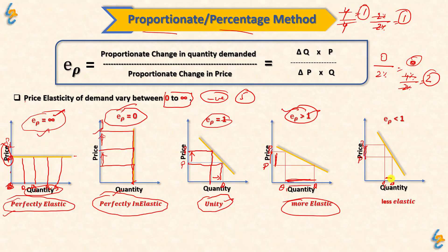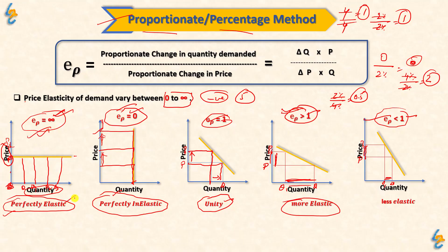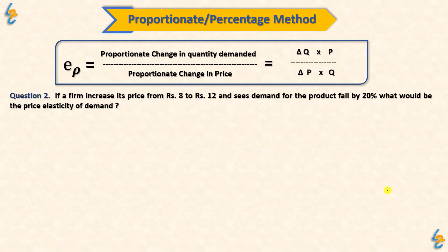The fifth case is Less Elastic, where the price elasticity of demand value is less than 1. For example, if price changes by 4% and quantity changes by only 2%, price elasticity = 0.5, which is less than 1. So, using the proportionate/percentage method, the five possible values of price elasticity are: infinity (perfectly elastic, demand parallel to X-axis), 0 (perfectly inelastic, demand parallel to Y-axis), 1 (unitary elastic), greater than 1 (more elastic), and less than 1 (less elastic).